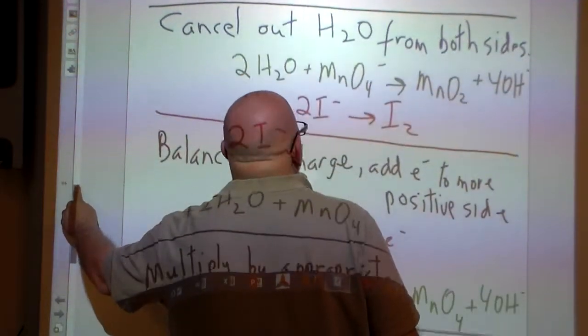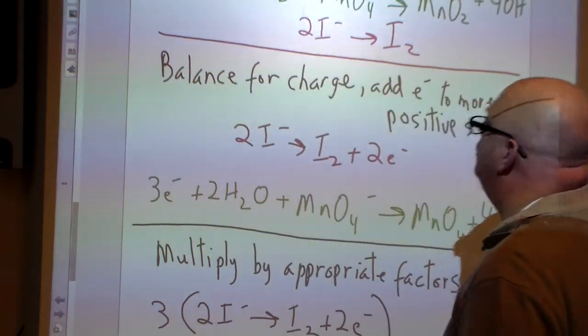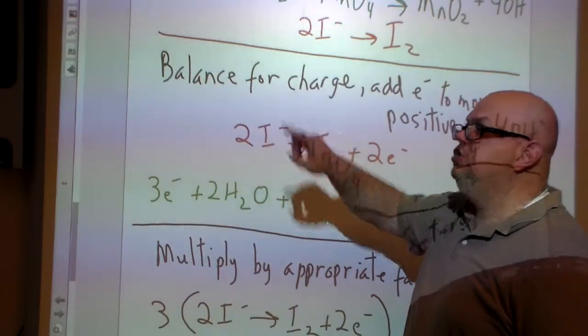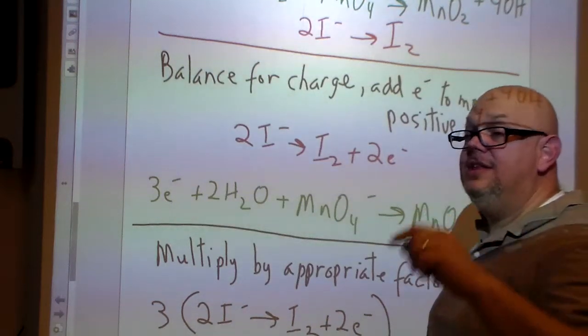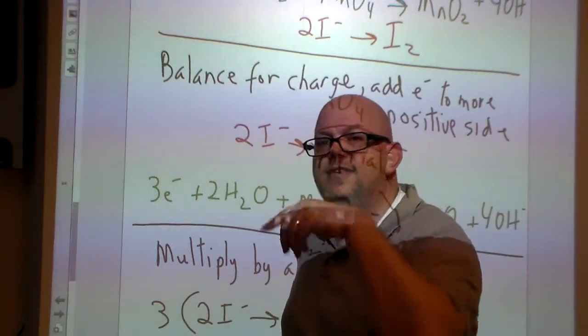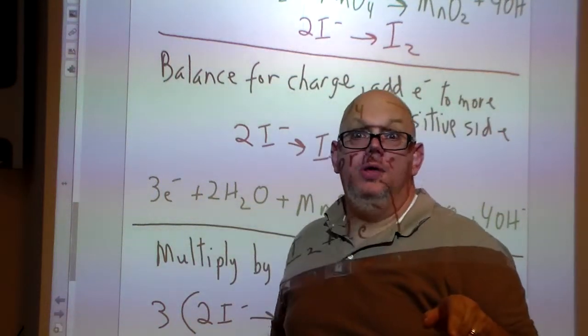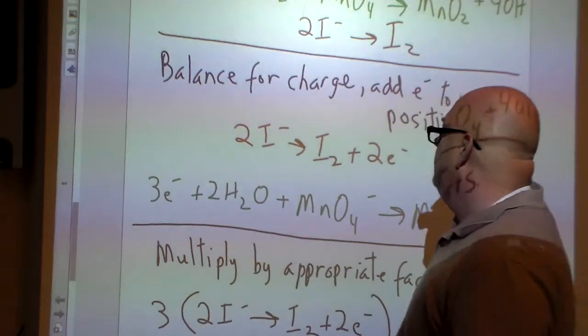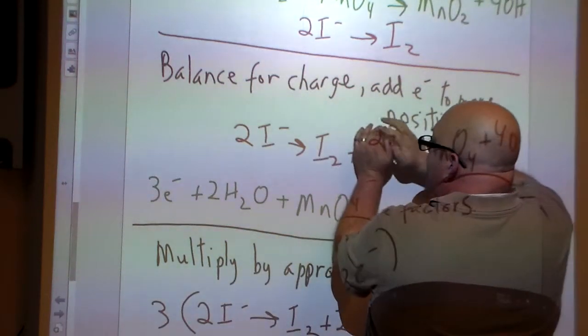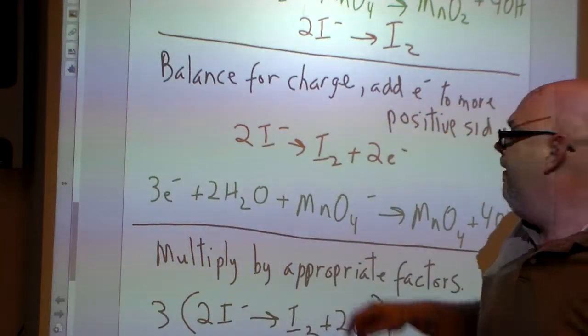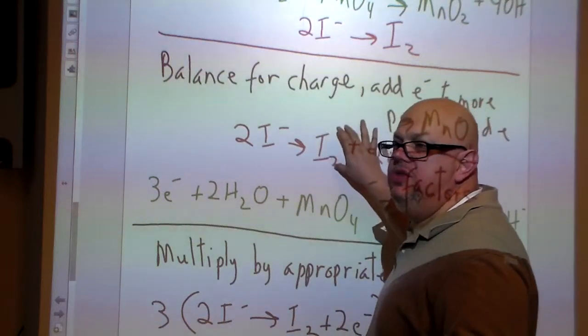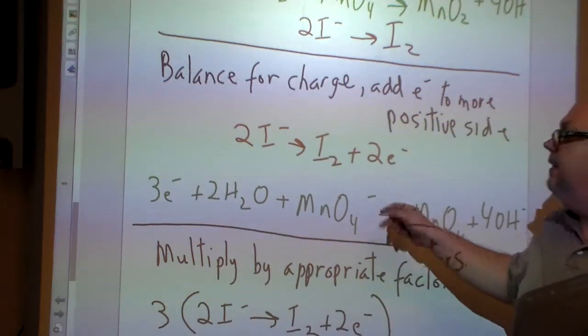Now it's time to balance out the charges. We have to add electrons to the more positive side. Here we have two I's, they each have a negative one charge because iodine is a halogen. It's got seven valence electrons originally, so it's going to pick up an electron and become a negative charge. We'll add two electrons on this side to counteract here because this is going to be the more positive side. Without those two electrons, this would be the more positive side. This is the more positive side, so we have to add those two electrons in there.